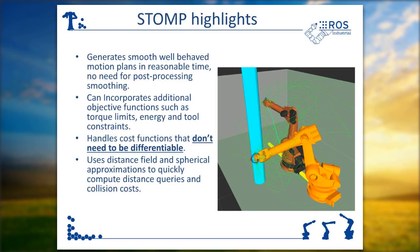One neat feature of STOMP is that it can accommodate cost functions that are non-differentiable — meaning that, in the mathematical sense, if you were to take the derivative of your cost function, you would get a function that has discontinuities. That is difficult to handle for many planners. Fortunately, STOMP doesn't require you to adhere to those requirements. For instance, if you have rules defining energy consumption in your robot, you can define those rules as a set of heuristics, and as long as you wrap them into the proper class interface, STOMP can use that cost function as part of its optimization process.